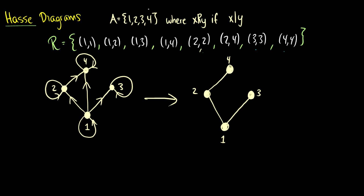Basically what this means is we have the same relations as before, just made a little bit nicer. So if we have a path from one, two, and four, this means one relates to two and one relates to four. If we connect something to a higher element, it's in a relation with everything it's connected to. So one is in a relation with three, two is in a relation with four, and it always goes upward. The general convention is that the lowest number goes on the bottom and it works bottom to top. So that's a Hasse diagram.